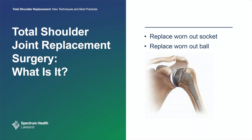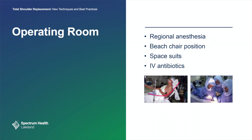In a shoulder replacement, we replace the worn-out socket and the worn-out ball, as seen on the slide on the right. You go to the operating room, and we generally use two types of anesthetics. First, you get a block — an injection that reduces post-operative pain for up to 18 to 24 hours — and then you go to sleep. You're not awake during this surgery. We put you in the beach chair position. The surgeons, as depicted on the right, use space suits to minimize infection, and all patients receive intravenous antibiotics.